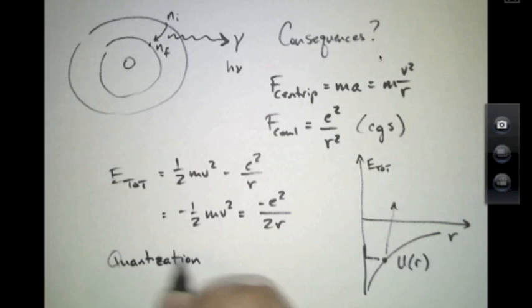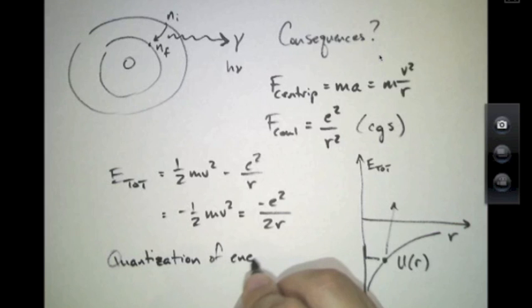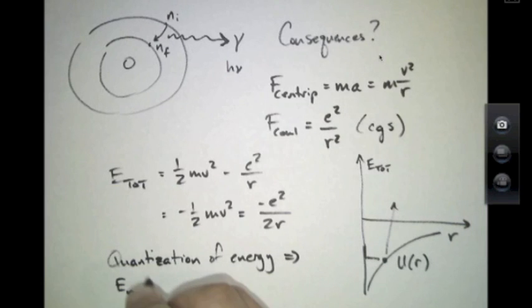And the fact that we're only allowing it to live at certain allowed energy configurations implies, because energy is related to radii, that only certain radii are allowed.